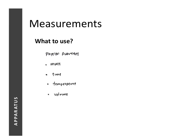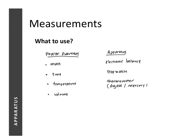For the first three physical quantities, you should already know the apparatus used to measure them. For mass, a common mistake students make is to say we use a weighing scale — a weighing scale is to find out the weight of a person. In science, when we need to find out the mass of a solid or substance, we use an electronic balance or a mass balance. For time, we use a stopwatch, and for temperature, we use a thermometer — which can be a digital thermometer, a mercury thermometer, or an alcohol thermometer. Mercury thermometers are no longer available in Singapore because mercury is a highly toxic substance.